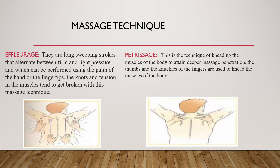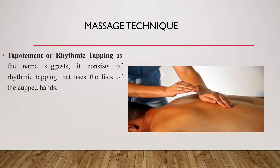The second technique is petrissage: this is the technique of kneading the muscles of the body to attain deeper massage penetration. The thumbs and knuckles of the fingers are used to knead the muscles. The third technique is tapotment, or rhythmic tapping: as the name suggests, it consists of rhythmic tapping using the fists or cupped hands.